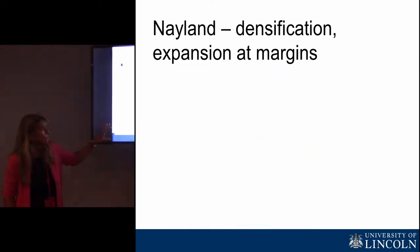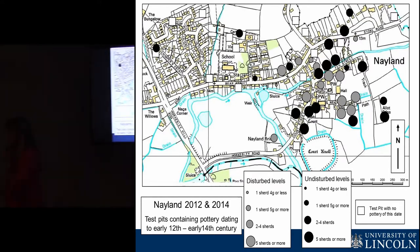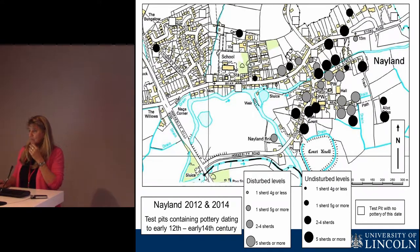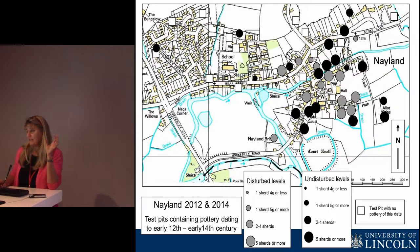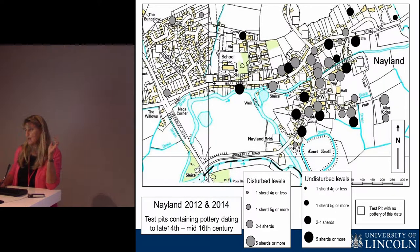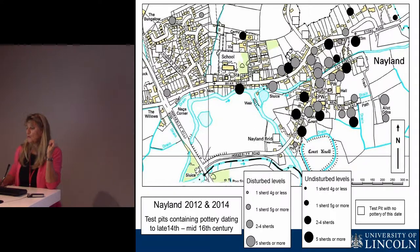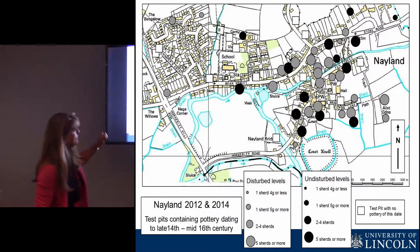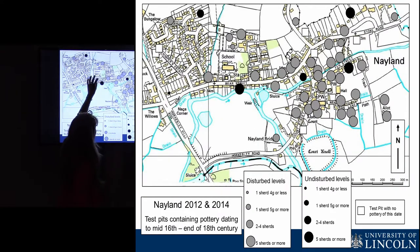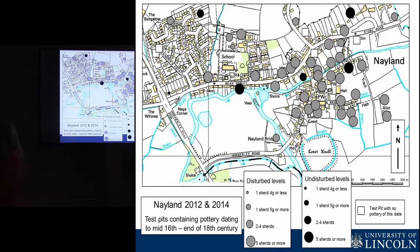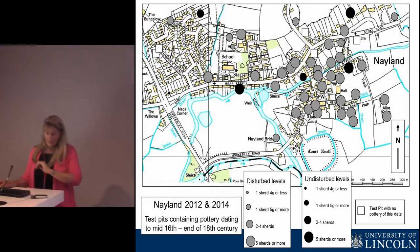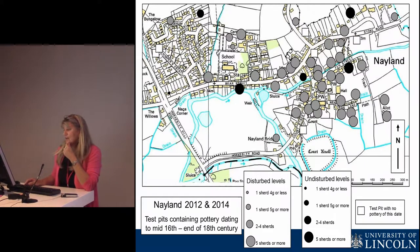At Nayland we see a village — or small town — that first appears in the high medieval period. It doesn't suffer any visible setback from the Black Death, but what we see in the 16th to 18th century is extension along the outlying streets, with growth in those areas.